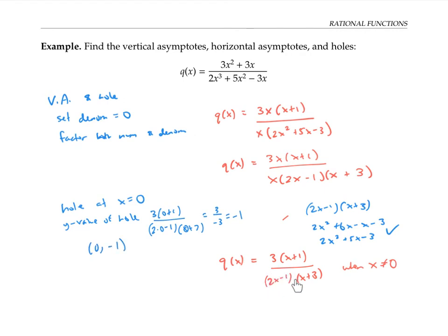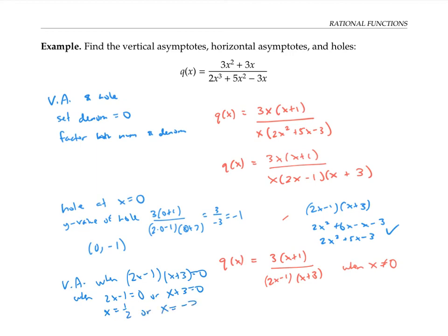Now all the remaining places in my denominator that make it zero will give me vertical asymptotes. I'll have a vertical asymptote when two x minus one times x plus three equals zero — that is, when two x minus one is zero or x plus three is zero. In other words, when x is one half, or x equals negative three. Finally, to find my horizontal asymptotes, I just need to consider the highest power term in the numerator and the denominator. That simplifies to three over two x, which is bottom heavy — when x gets really big, this expression is going to zero. That means we have a horizontal asymptote at y equals zero.